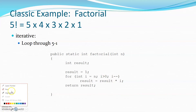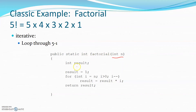When this method is called, there are pieces of data being created in memory for each variable. This method has three variables — three pieces of data being used. Again, this is the iterative approach to doing factorial.